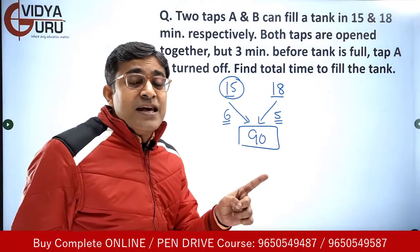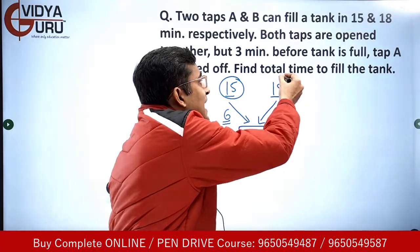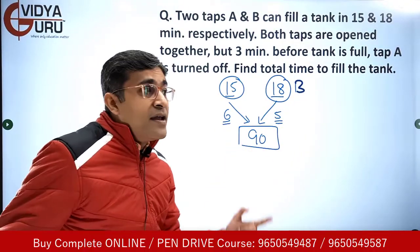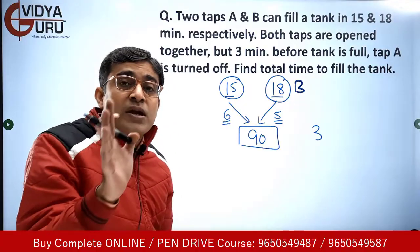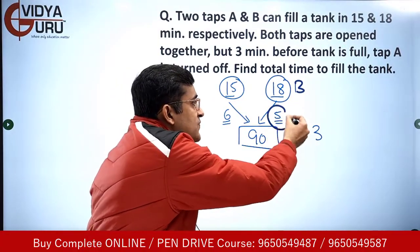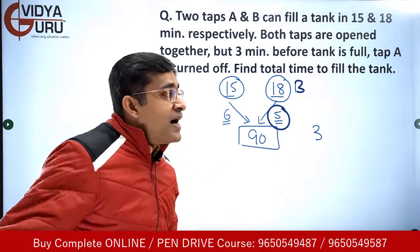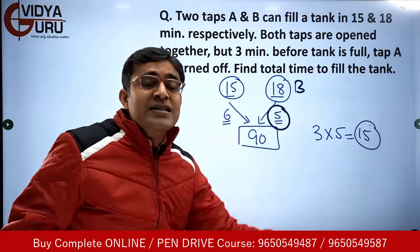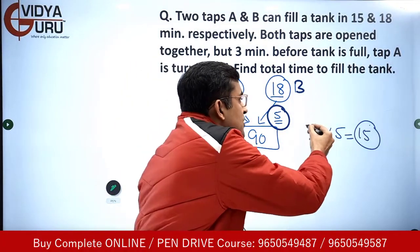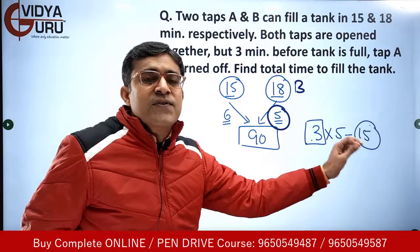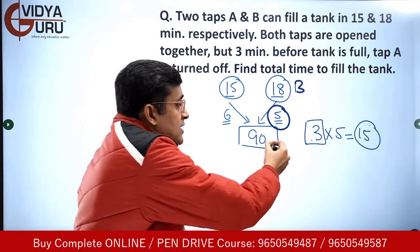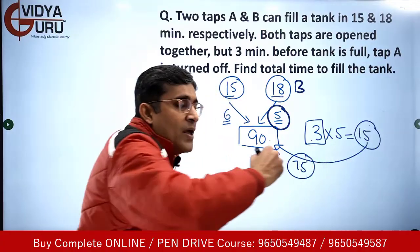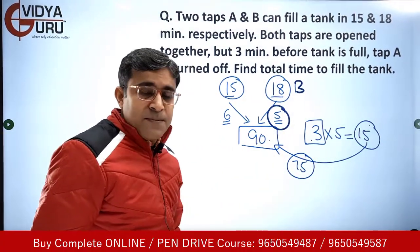Now look at the situation: in the last three minutes, only tap B is functioning because tap A has already been turned off. So what is the work done in the last three minutes? Since only B is working and B does 5 units per minute, in the last three minutes B does 3 × 5 = 15 units alone. That means 75 units were done together, because 15 units were done at the end by B alone.